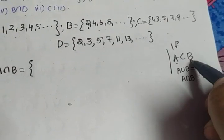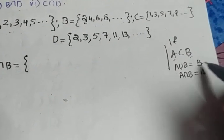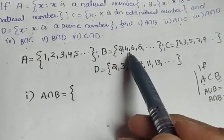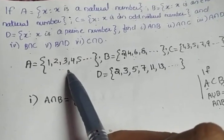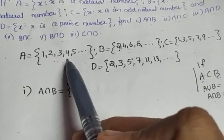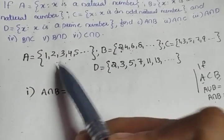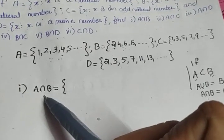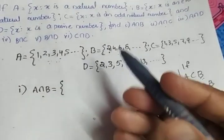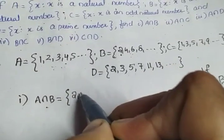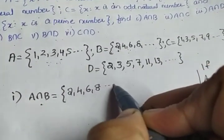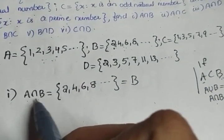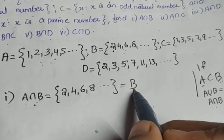If one set is a subset of the other, while taking the union we get the bigger set, and while taking the intersection we get the smaller set. Here B is actually a subset of A, since {2, 4, 6, 8, ...} are all in set A. So A intersection B = {2, 4, 6, 8, ...}, which is equal to B.